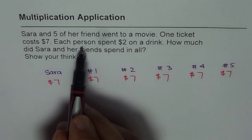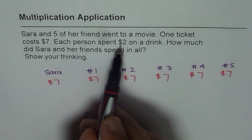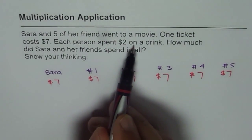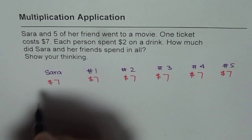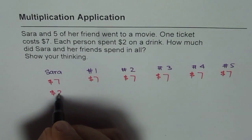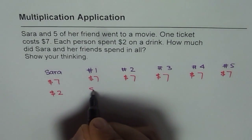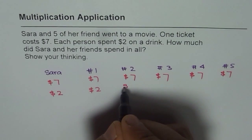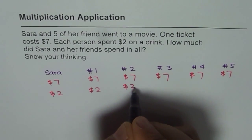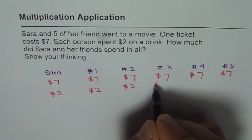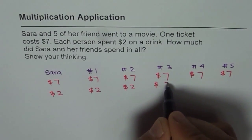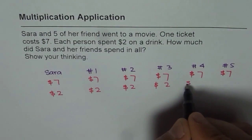Each person also spent $2.00 on a drink. So on a drink they spent $2.00 each — so that is the drink cost for all of them.